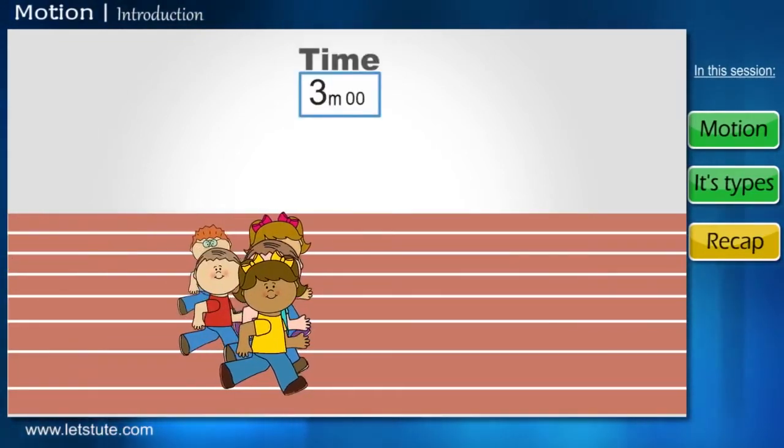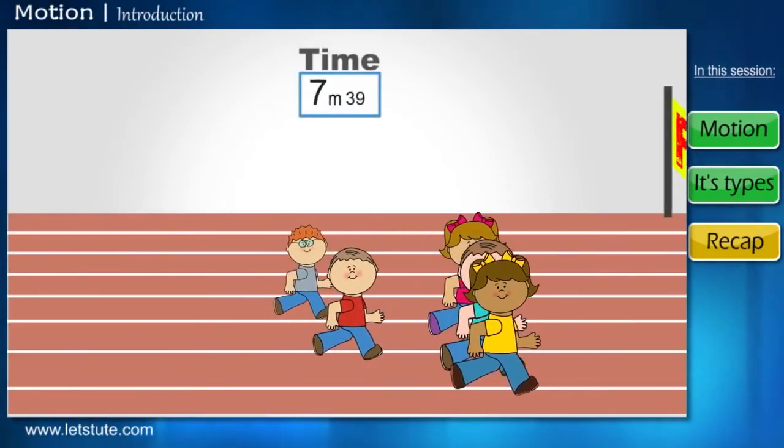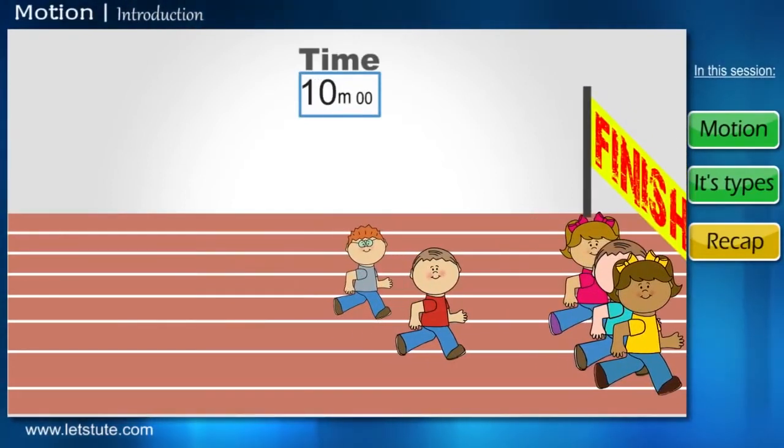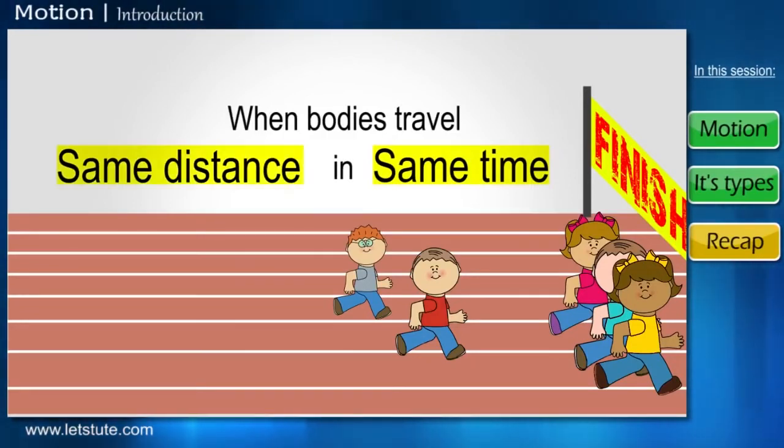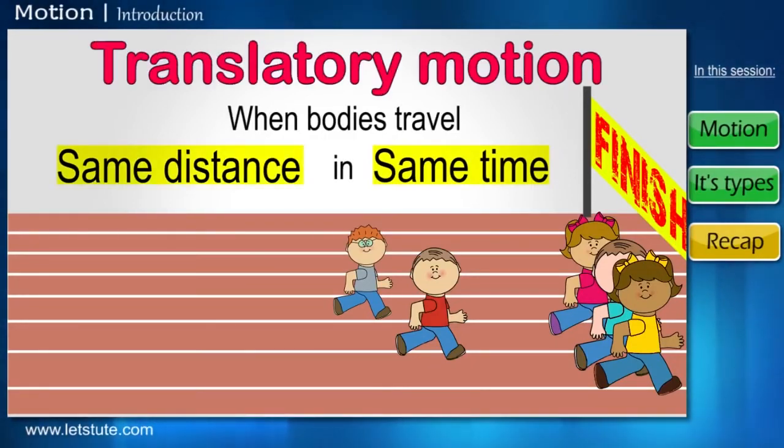Here we see that there are kids participating in a race. At the end of the race, we see that there is a tie between three kids. The reason for the tie was because all three kids took the same amount of time to complete the race. The distance covered is also the same as it's a fair race. Thus we can conclude that all three kids took the same time to cover an equal distance. This type of motion, where bodies take an equal amount of time to cover equal distance, is known as translatory motion.